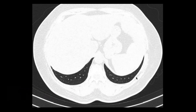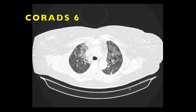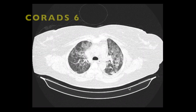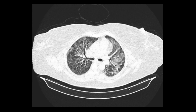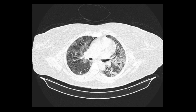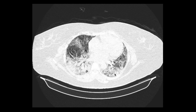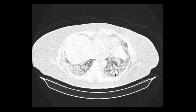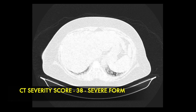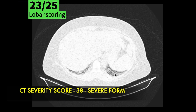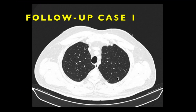This is an RT-PCR proven case of COVID-19 showing areas of ground glass opacities distributed bilaterally, involving almost all the segmental regions of both lungs, with areas of consolidation as well. This is a severe case of COVID-19, classified as CO-RADS 6 with a CT severity index of 38 out of 40.